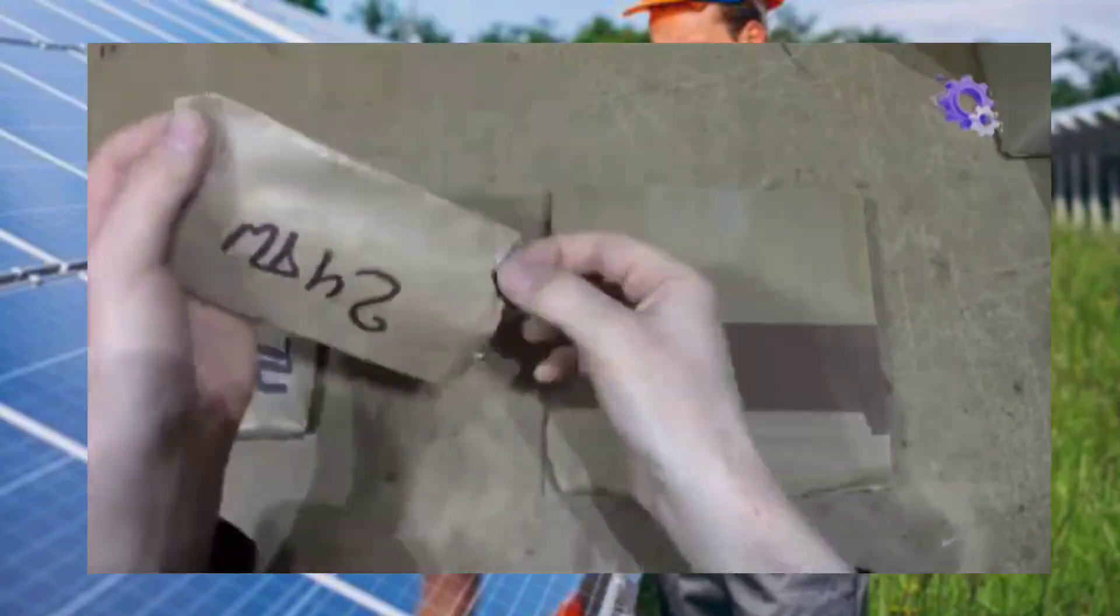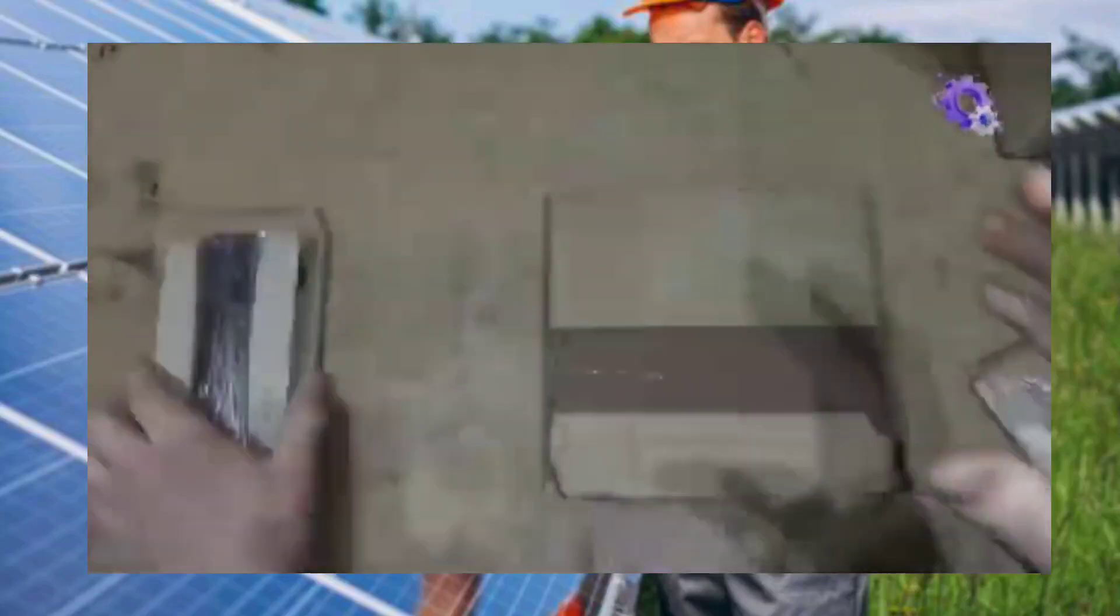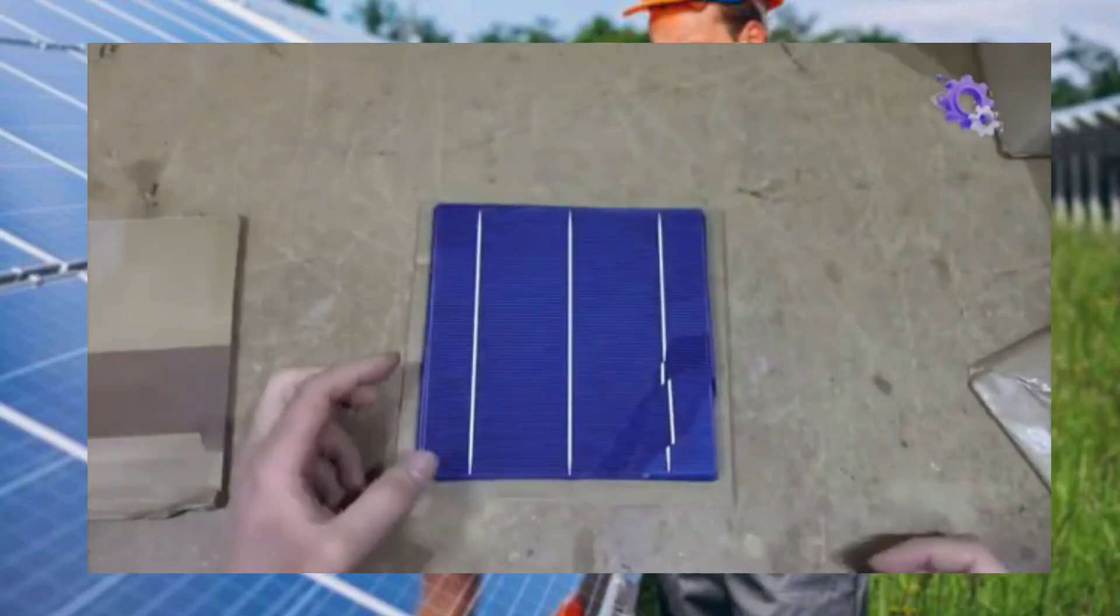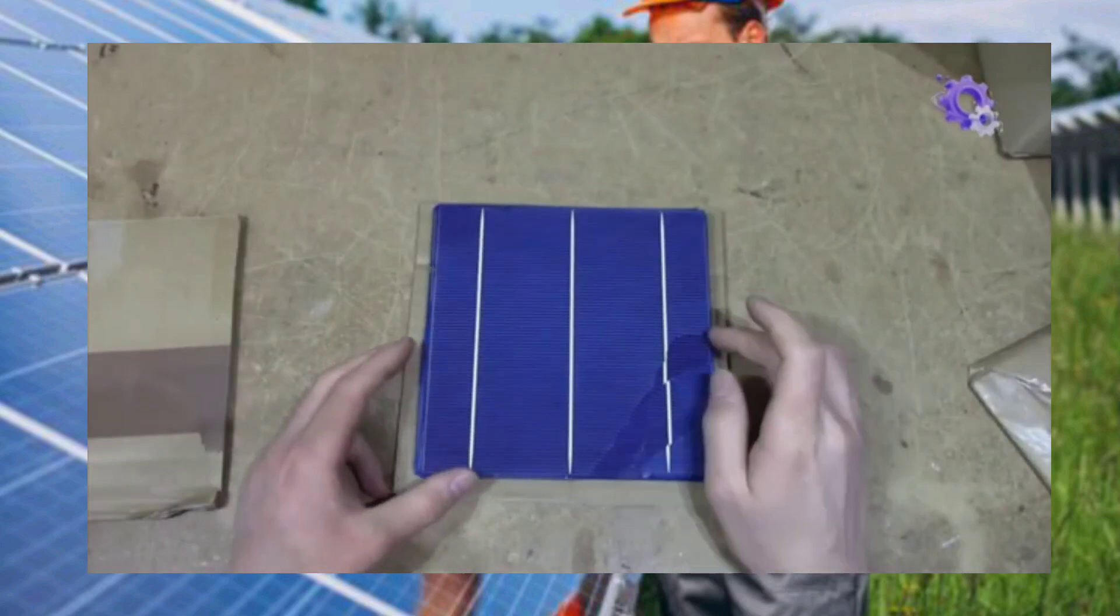There are many ways of acquiring solar cells. Platforms like eBay simplify the process. Ensure you select cells with a watt rating that aligns with your energy requirements and available space.